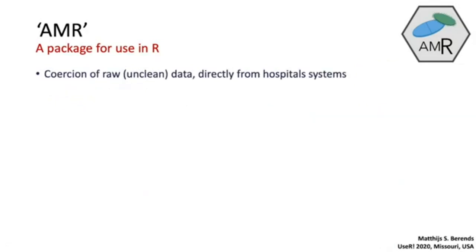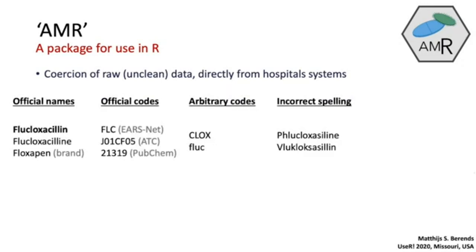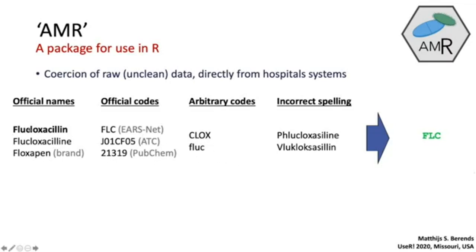So what can it do? You can use it to coerce raw, unclean data that you get from laboratory or hospital systems. Here's an example: you see the official name of flucloxacillin, which is an antibiotic, some derivations from other countries and languages, and a brand name — which differs per country. There are also official codes: one by EARSnet, one by the WHO as an ATC code used in pharmaceutical systems, a compound ID by PubChem, and arbitrary codes found in laboratory systems, plus some incorrect spellings. Our package can coerce all of this to FLC, the EARSnet abbreviation for this antibiotic.